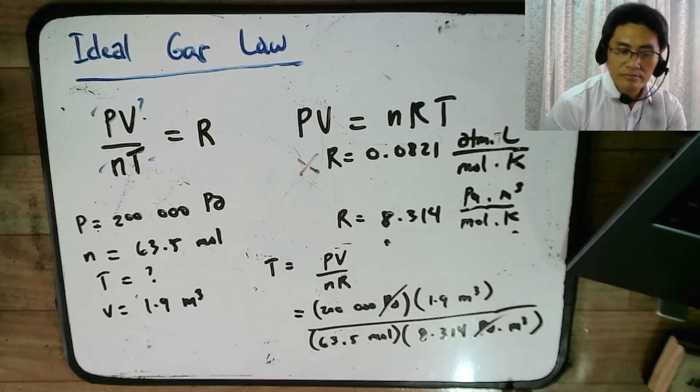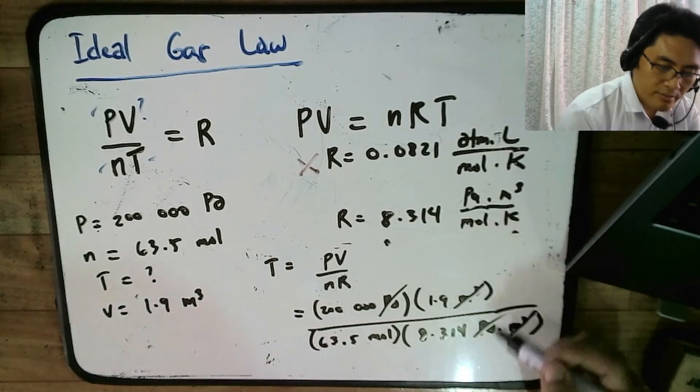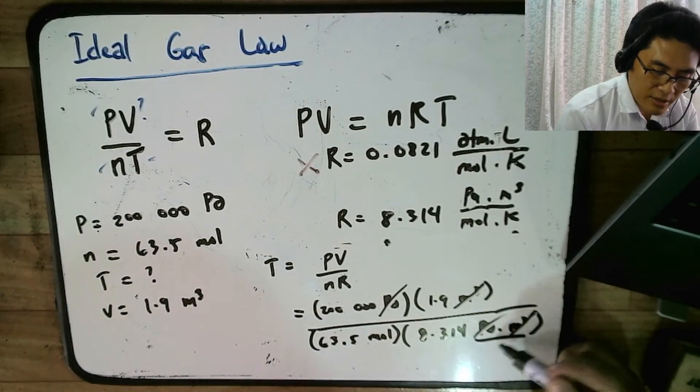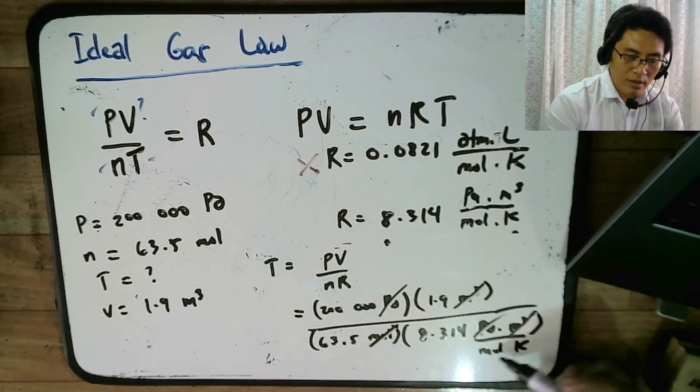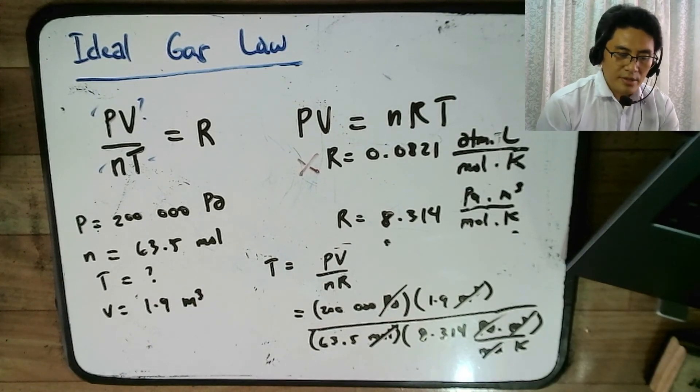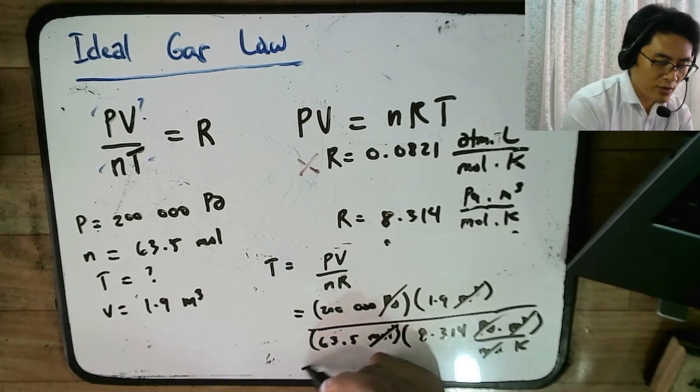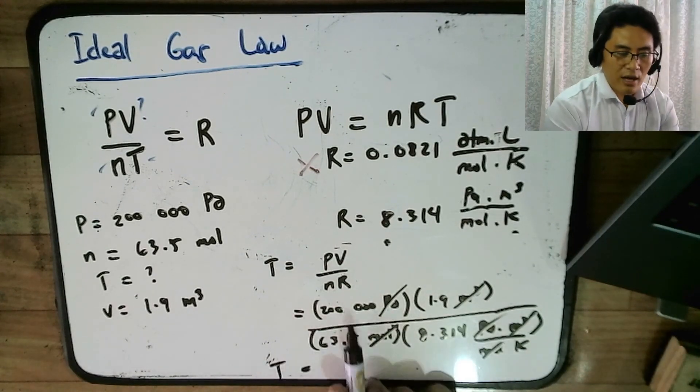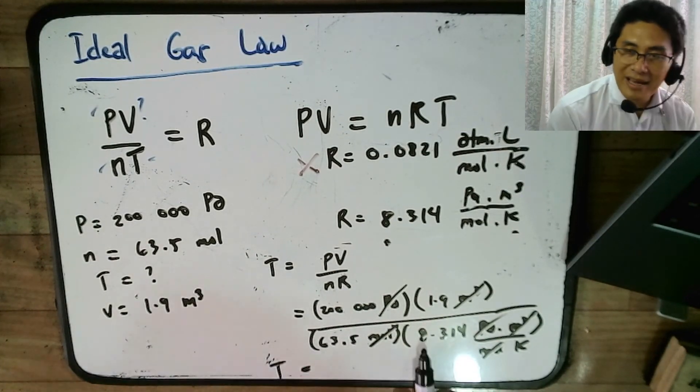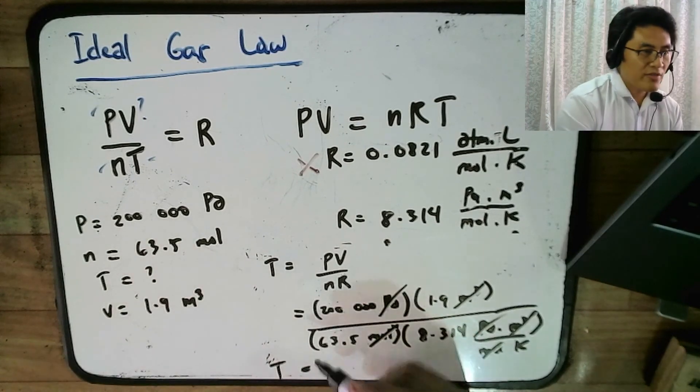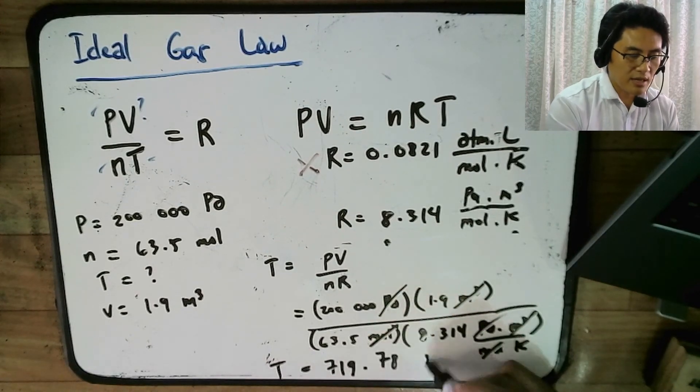And then the R is, again, you cannot use this because this is in ATM liter. You have to use this because this is in Pascal and meter cube, which is 8.314 Pascals dot meter cube per mole Kelvin. Pascal cancels out. Meter cube cancels out. Mole gets canceled out. So what is left is Kelvin. So all of these, when you calculate, will give you Kelvin. So now the temperature, if you multiply 200,000 times 1.9 divided by 63.5 divided by 8.314, the answer will be 719.78 Kelvin.